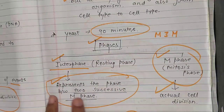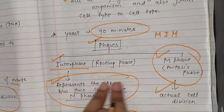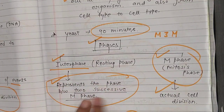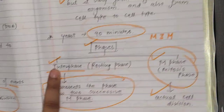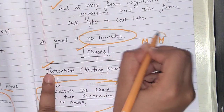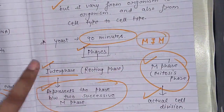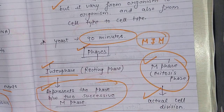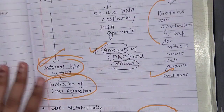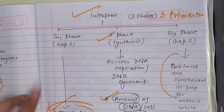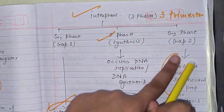Interphase represents the phase between two successive M phases — M, Interphase, M, meaning Mitosis, then Interphase, then Mitosis. Within Interphase, there are three phases: G-1 phase (Gap-1), S phase (Synthesis), and G-2 phase (Gap-2).